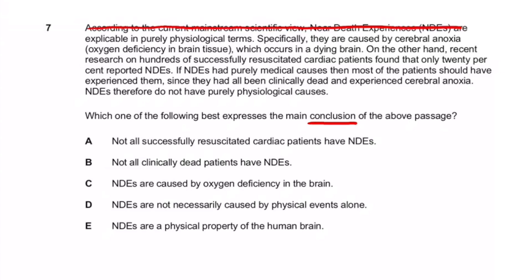The next sentence specifies: 'They are caused by cerebral anoxia — oxygen deficiency in brain tissue — which occurs in a dying patient.' That's literally explaining the cause of near-death experiences as fact, so we don't need that one. Then: 'On the other hand, recent research on hundreds of successfully resuscitated cardiac patients found that only 20% reported NDEs.' A general tip: whenever numbers are stated, that's factual information — someone won't just make up a random percentage — so this is factual too.